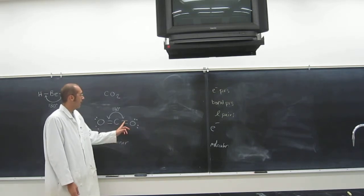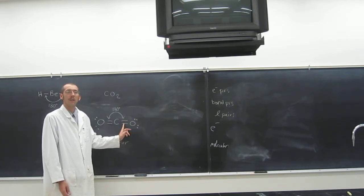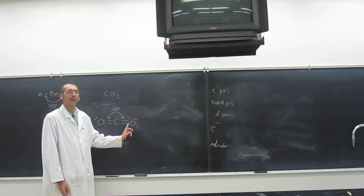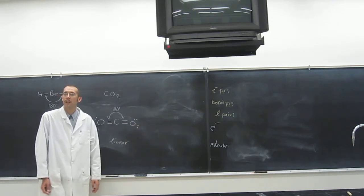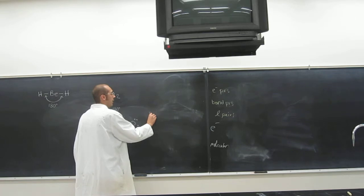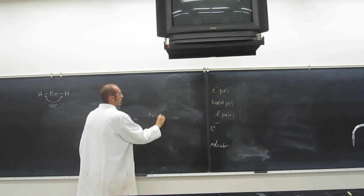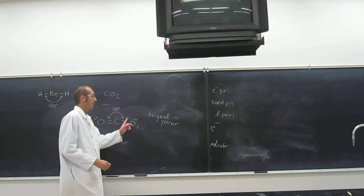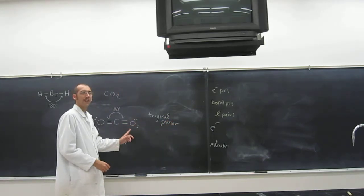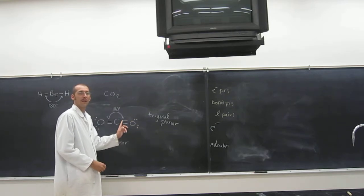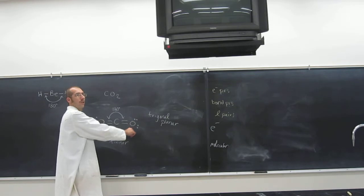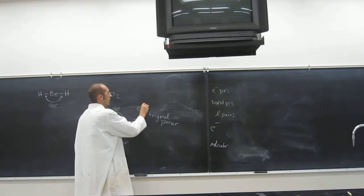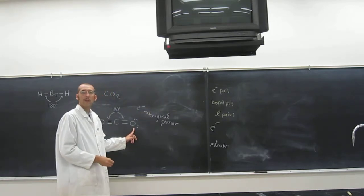What about here — are the electrons around the oxygen arranged linearly? No. What is the electron arrangement around the oxygen? Trigonal planar. So that's the electron geometry. Could you do the molecular geometry around the oxygen? You can't do it, because you've got to go bond to bond and there's no second bond. But you can do the electron geometry.